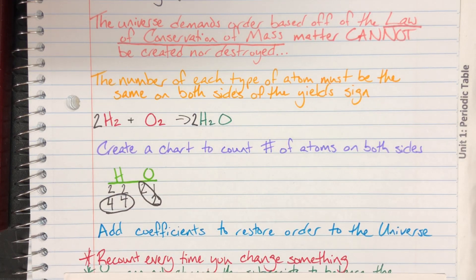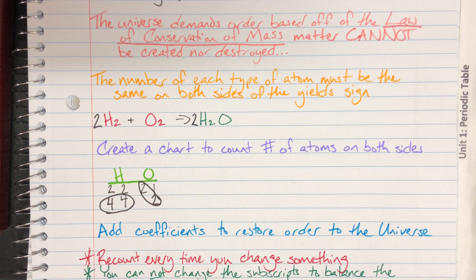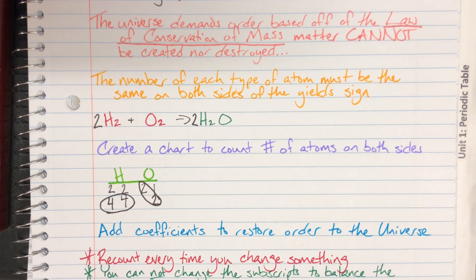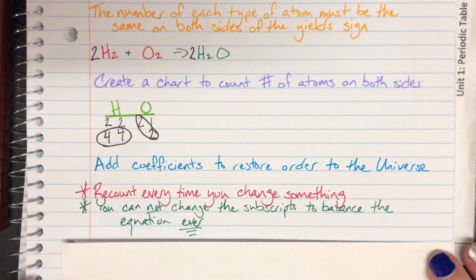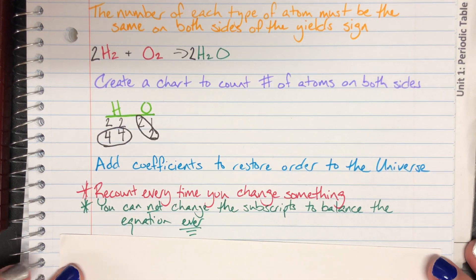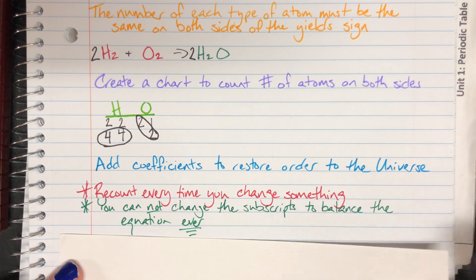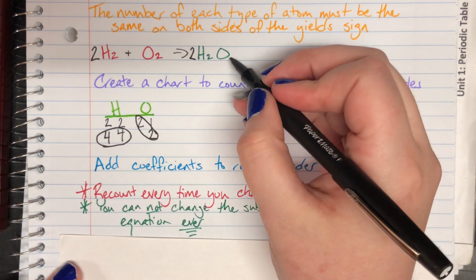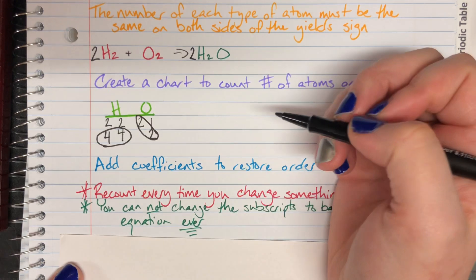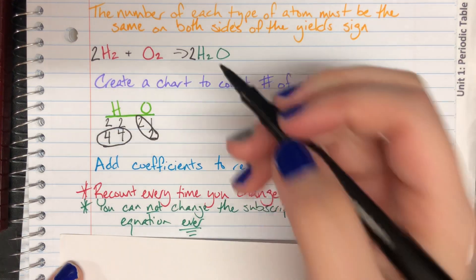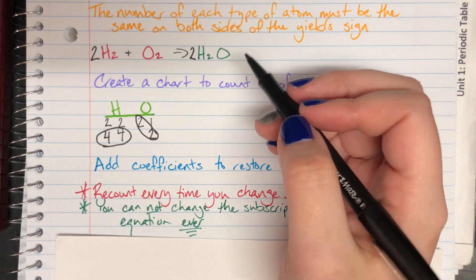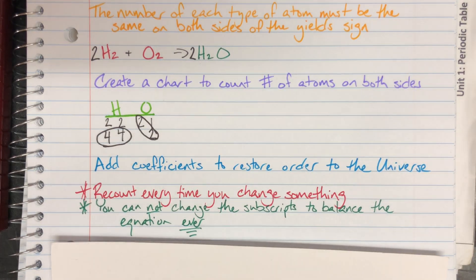As another rule that is critical, it is super important that you do not ever change the subscripts in order to balance the equation. Ever. No touchy touchy. I could not have just added a little two down there. That is not allowed. That completely changes what this compound is, so I cannot do that if I'm trying to balance the equation. I have to rely on coefficients and coefficients alone.